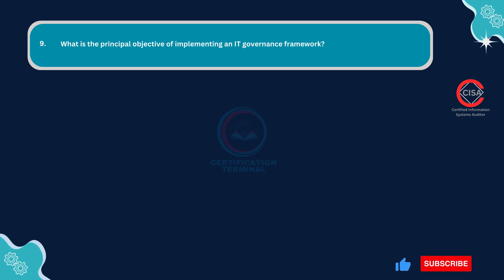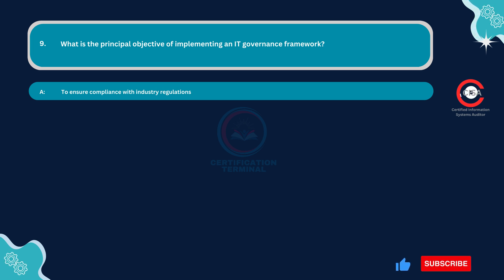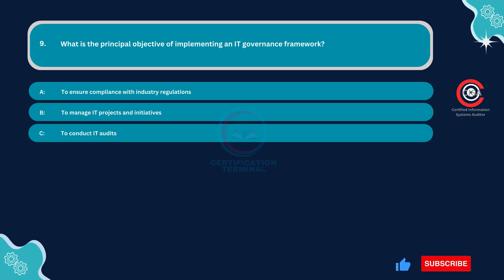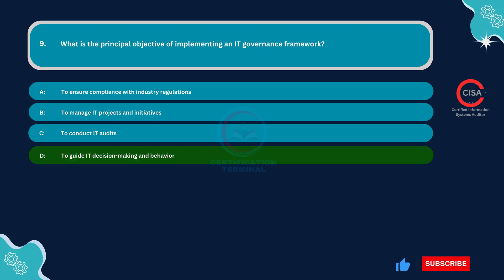Question 9: What is the principal objective of implementing an IT governance framework? Option A: To ensure compliance with industry regulations. Option B: To manage IT projects and initiatives. Option C: To conduct IT audits. Option D: To guide IT decision-making and behavior. The correct answer is Option D: To guide IT decision-making and behavior.